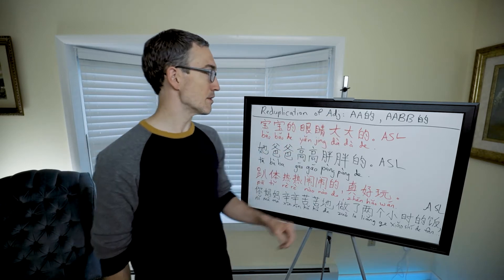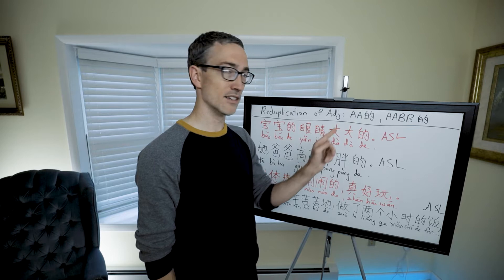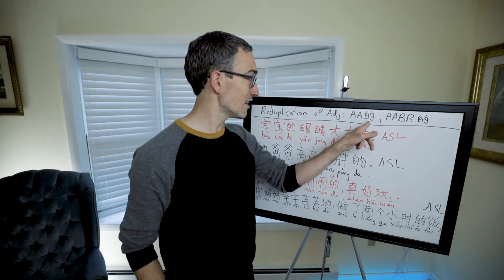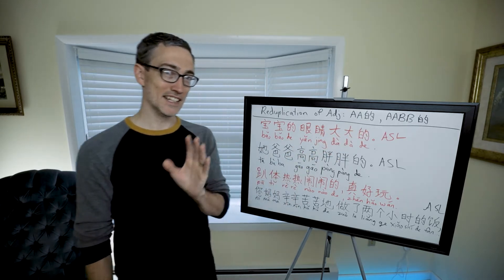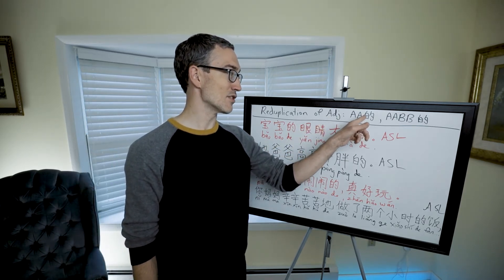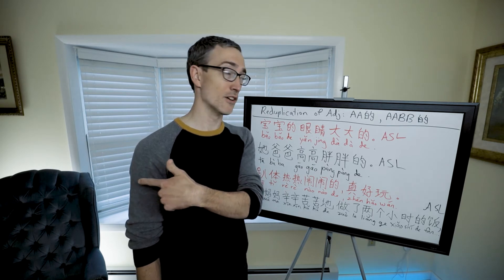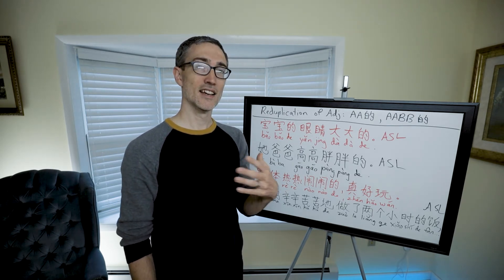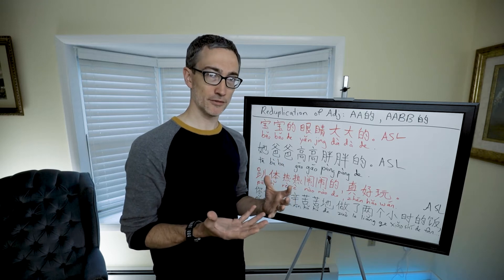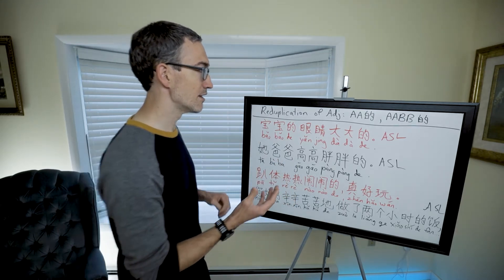Let's describe the structure. If it's a single-syllable adjective, the pattern is AA + de. So if the adjective is 'tall' (gao) and you want to reduplicate it, you say 'gao gao de.' I need to point out that this 'de' has a different function than the 'de' we talked about in the previous video — it is not marking an adjective.